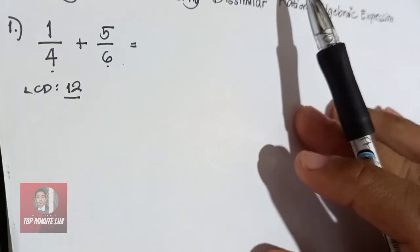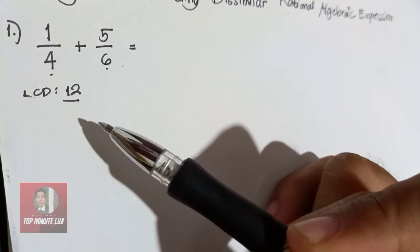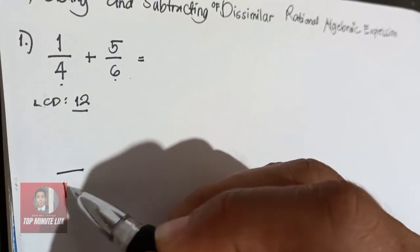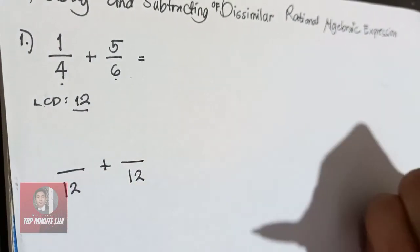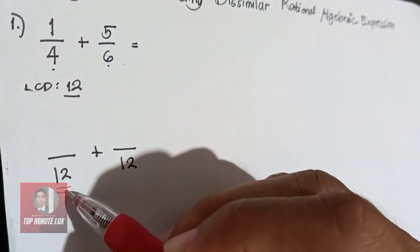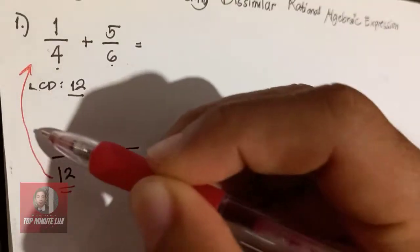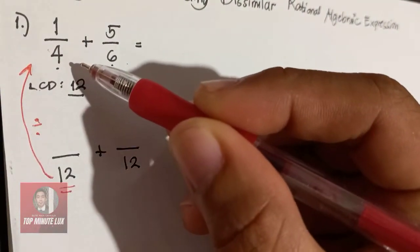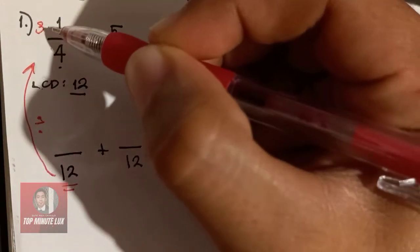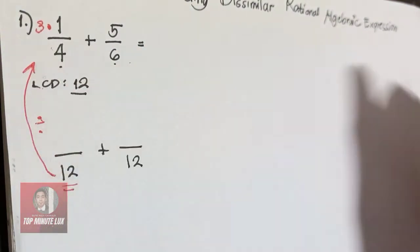After finding the LCD, we need to change from dissimilar fractions into similar fractions. So, over 12 and over 12. Next, divide 12 by 4 — that gives 3. Place 3 here, then multiply it with the numerator: 3 times 1 gives 3.